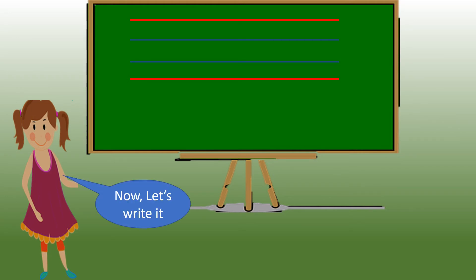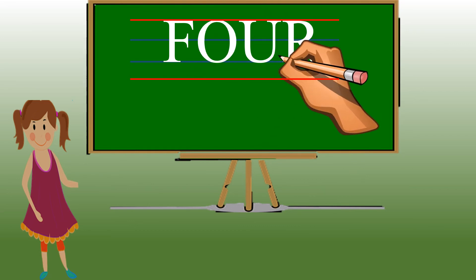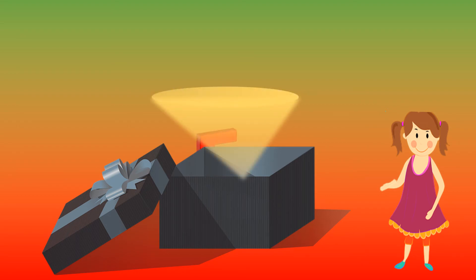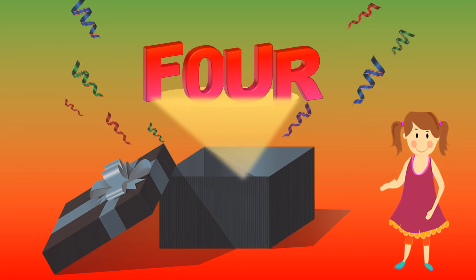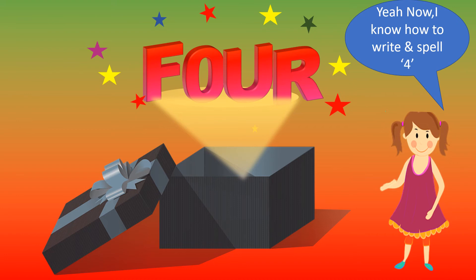Let's write the number four now. Yes, let's write the number four. F-O-U-R, 4. Now the box has, I think, number four. F-O-U-R, 4. Yay! Now I know how to spell and write number four.